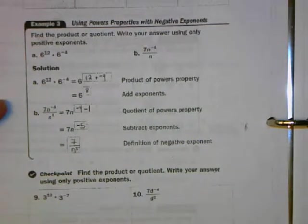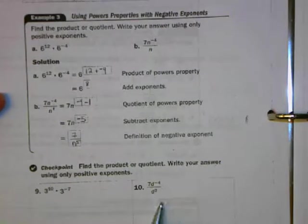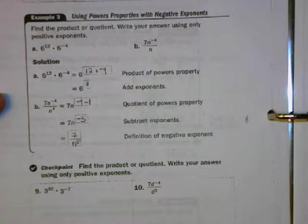Now, you're going to pause this presentation, and you're going to do numbers 9 and 10 in the checkpoints. After that, you're moving on to the practice for section 4.6.